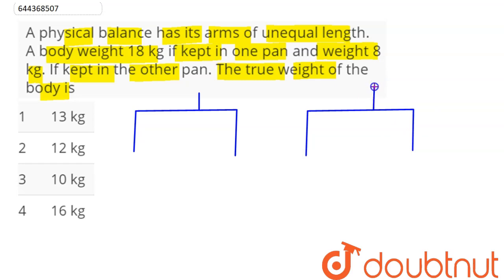pan here weighs 18 kg. So we can see here if the body is kept on this side, then its reading comes out to be 18 kg. That is, here this is balanced